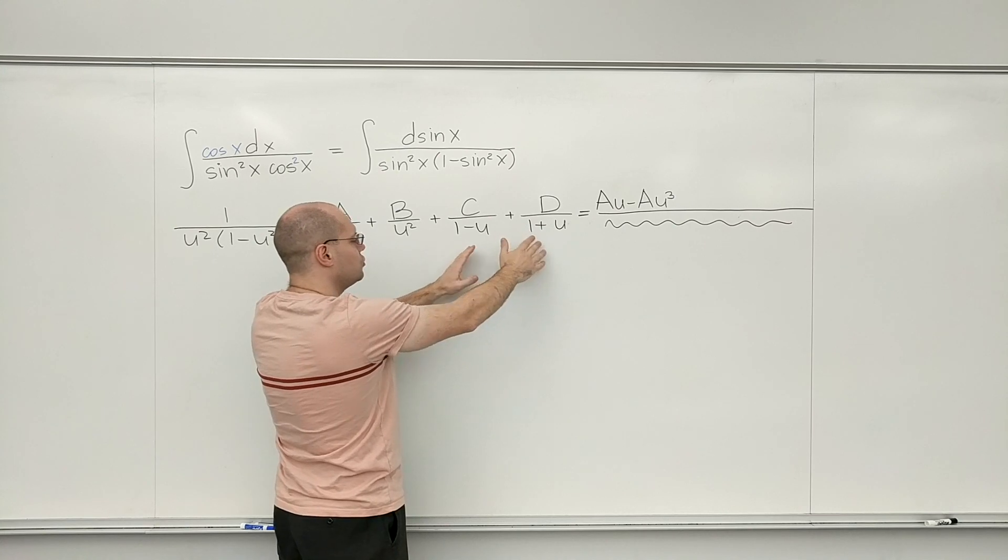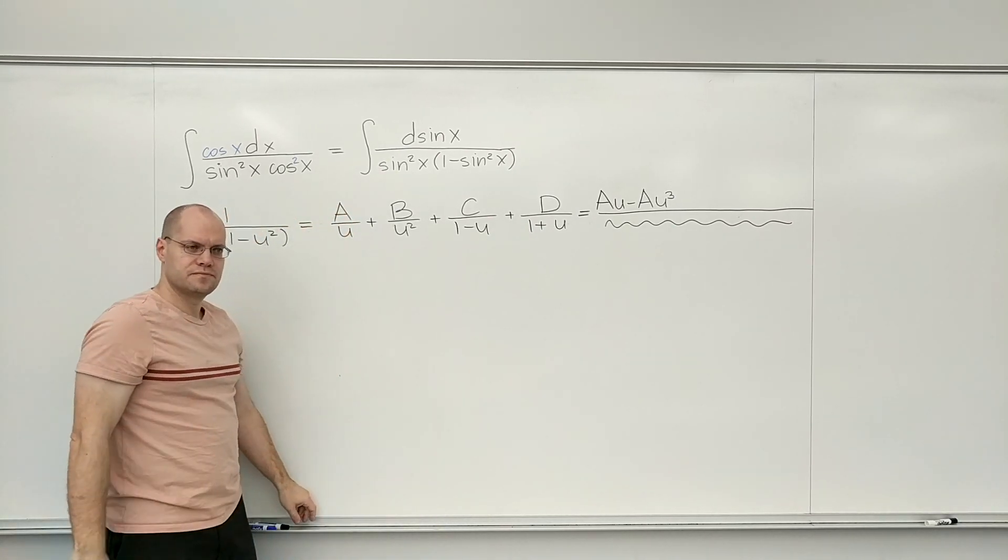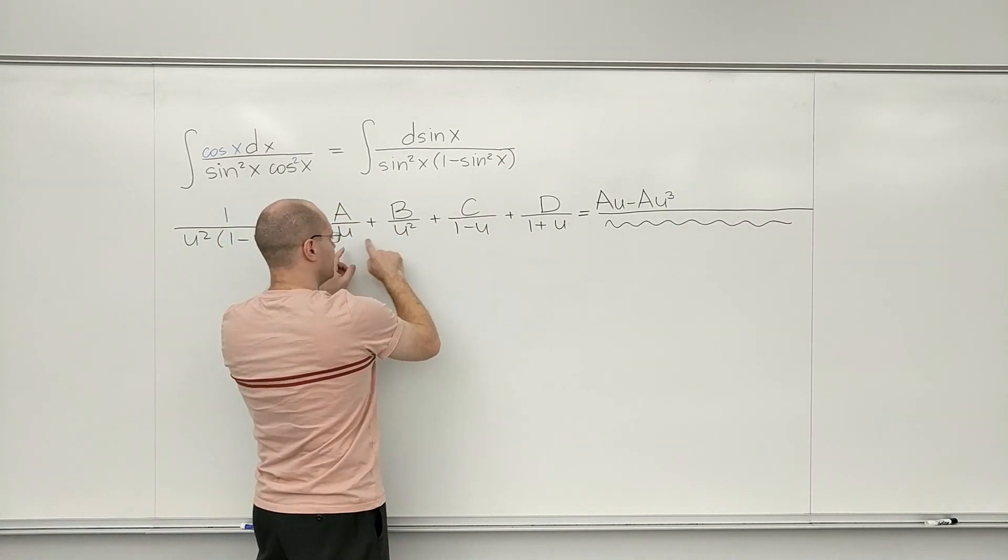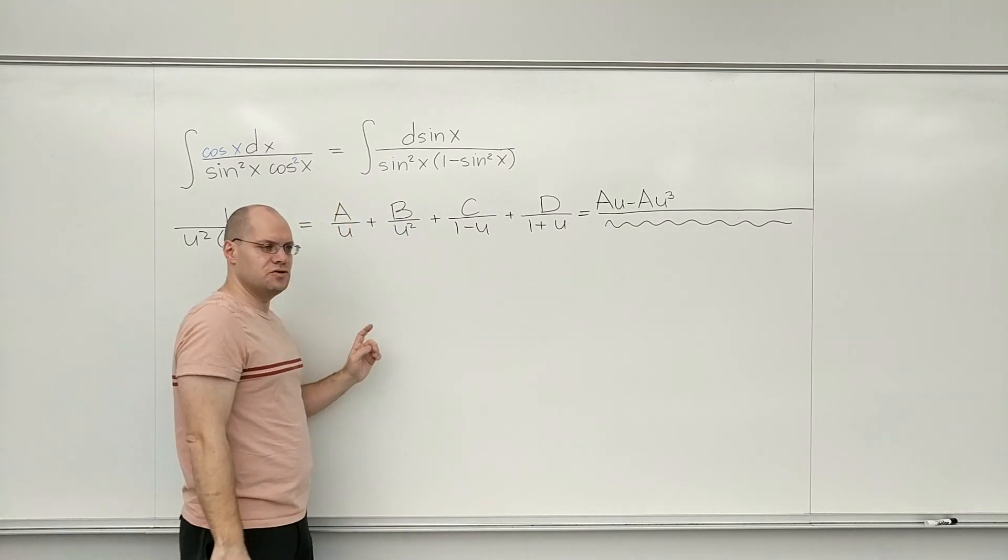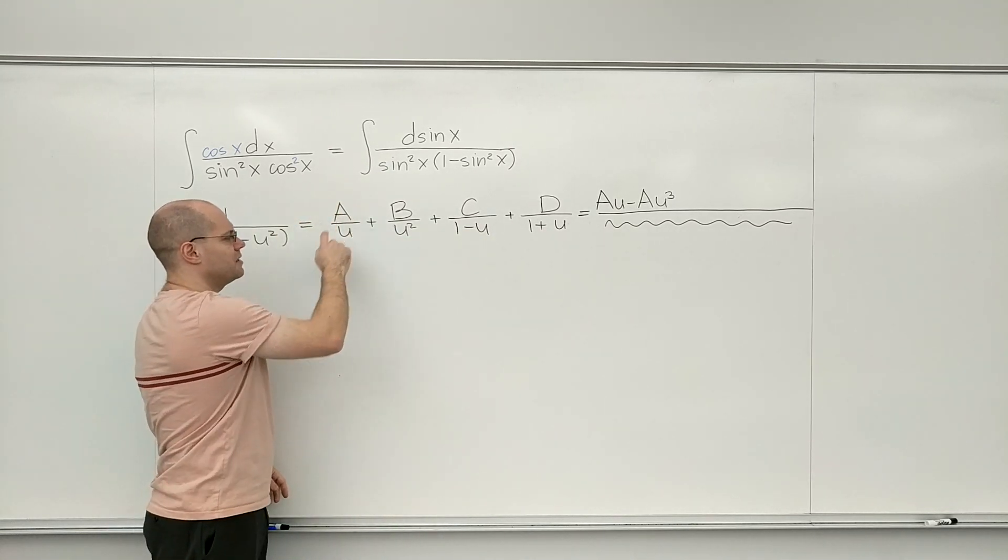In other words, u minus u cubed. So the product of u, 1 minus u, and 1 plus u, is u minus u cubed, and that multiplies A.